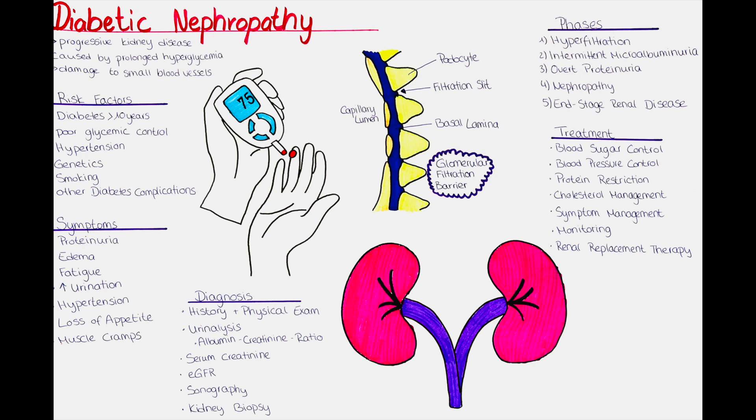Proteinuria can cause the urine to appear foamy or frothy due to the presence of excess proteins. As kidney function declines, waste products can accumulate in the bloodstream, leading to a loss of appetite, nausea and vomiting. Some patients with diabetic nephropathy may also experience difficulty sleeping due to frequent urination, leg cramps, or discomfort caused by edema.